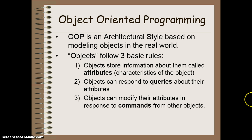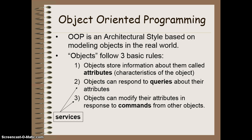The second rule is that objects can respond to queries about their attributes. So for example, I could ask an object what its age is, what its IQ is, and what its height is. And then finally, I can have objects that modify their attributes in response to commands from other objects. So I can say increase your IQ to a particular student. These last two rules are basically what we call services or methods — ways of interacting with an object and modifying the attributes of it.